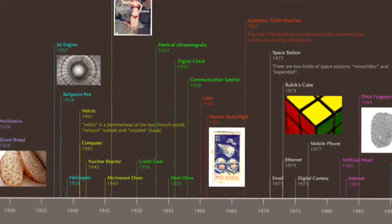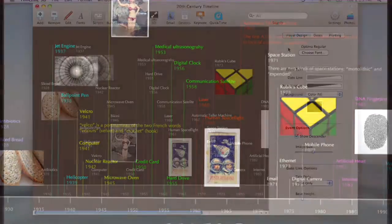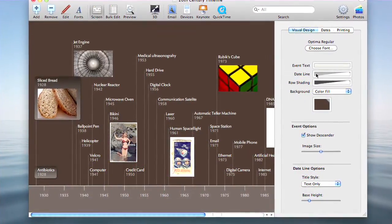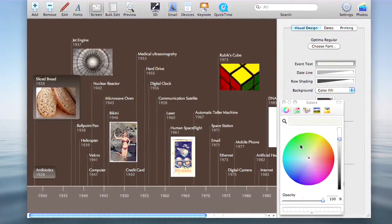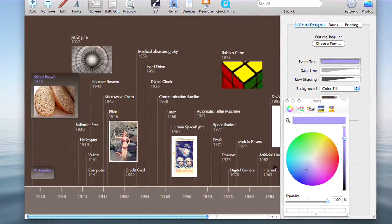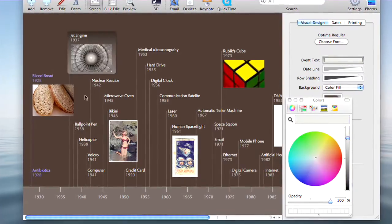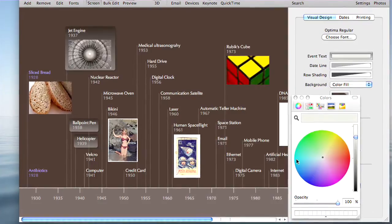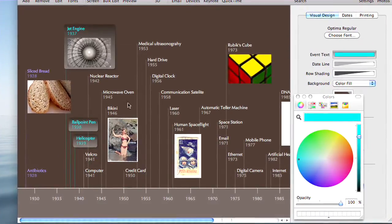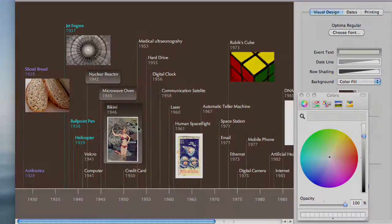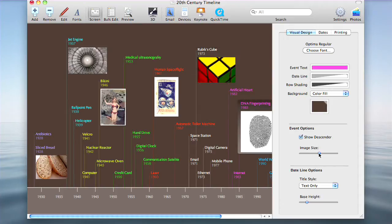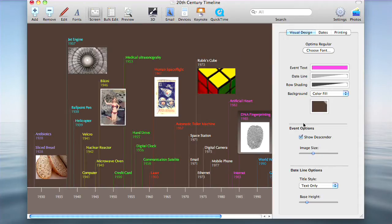First, I will select a group of events by dragging a box around them or using shift click. Then I will choose the visual design tab in the settings panel and click the color field labeled event text. Now I can pick a new color for the selected events. I'll adjust the image and font size so that my events fit together nicely. This will keep my timeline concise.